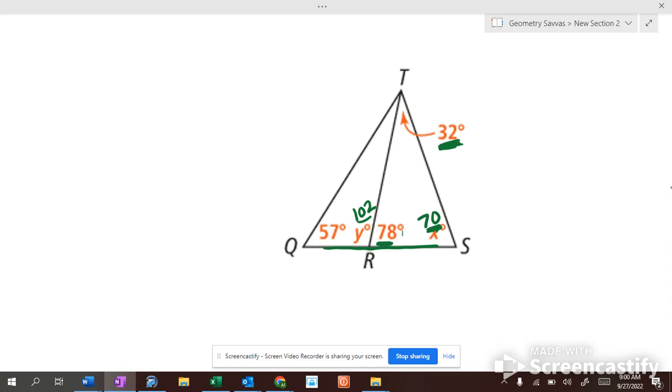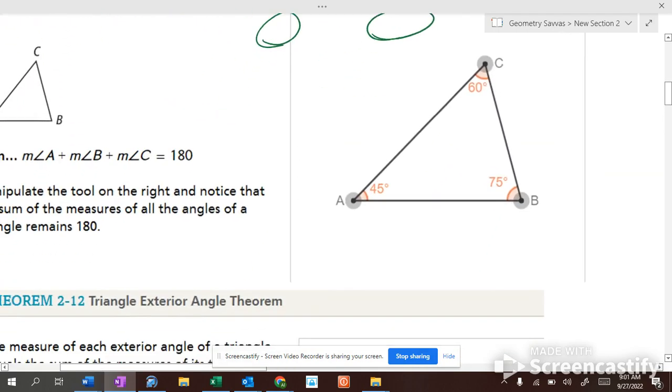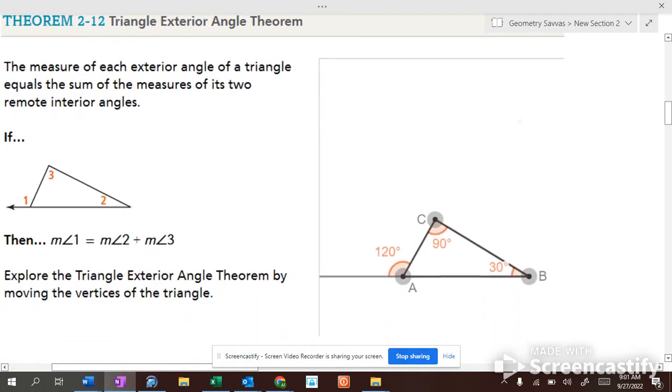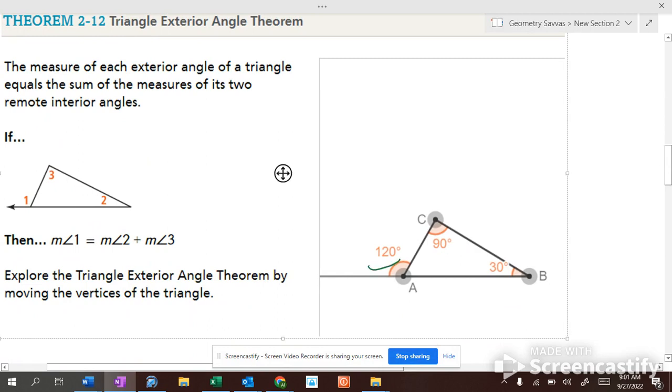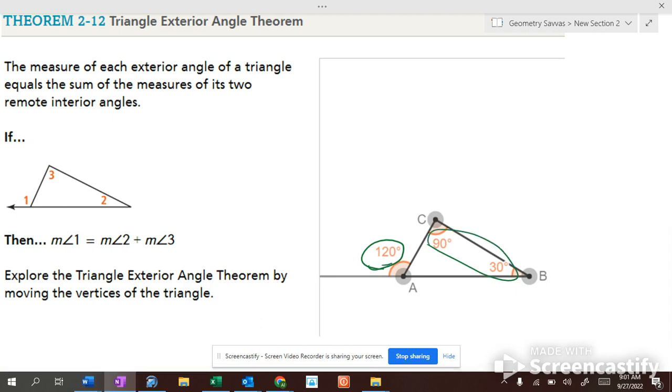Because there's 180 inside of here. So, if this is 78, this has to be 102. So, what's left over after the 78 is 102. These two are what's left over after 78, so they add up to 102. The exterior angle theorem.